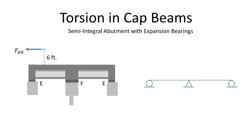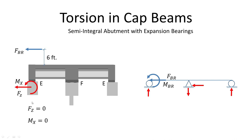The semi-integral abutments with expansion bearings shown on this slide are very common for prestressed concrete girder bridges. Semi-integral abutments are not very different from non-integral abutments in terms of transferring braking loads. The moment will be resisted by vertical reactions that can be ignored, and the force will get transferred to the fixed bearing location. So abutments in this case will not experience any lateral force or torque due to braking load.